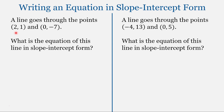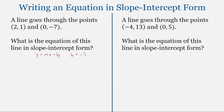In the examples we will work with today, you'll be given one point that is on the line along with the y-intercept in some form. For these first two examples, the y-intercept is given as an ordered pair. We know this is the y-intercept because it has an x-coordinate value of 0, so it's on the y-axis. With slope-intercept form, y equals mx plus b, and we know that b is equal to negative 7. Now we need to find the slope.